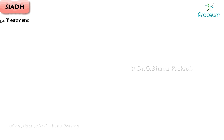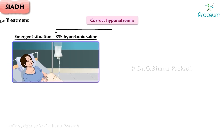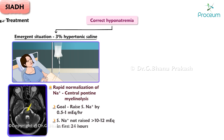Treatment. Treatment focuses on correcting hyponatremia. First-line therapy in emergent situations is infusion of 3% hypertonic saline. Do not correct sodium levels too quickly, as rapid normalization can lead to central pontine myelinolysis. The goal is to raise serum sodium by 0.5 to 1 milliequivalent per hour. Sodium levels should not be raised more than 10 to 12 milliequivalents in the first 24 hours; maximum target is 125 to 130 milliequivalents per liter.